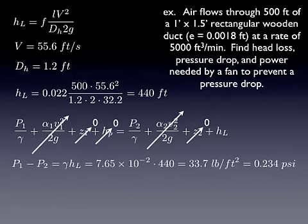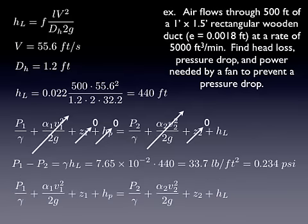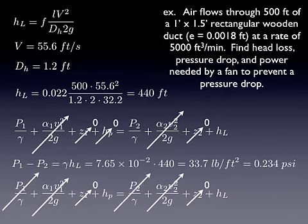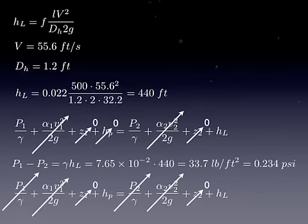And then finally, if we're going to use a fan here to eliminate that pressure drop, let's go back to the energy equation. Same assumptions. The velocities are the same, so they cancel out. The elevations are the same, or they're set to zero, so they drop out. Now we're going to have a pump head here because we have a fan, but we're doing it such that the pressure difference is zero. So these pressures are going to cancel out. So all we're left with is the pump head equals the head loss.